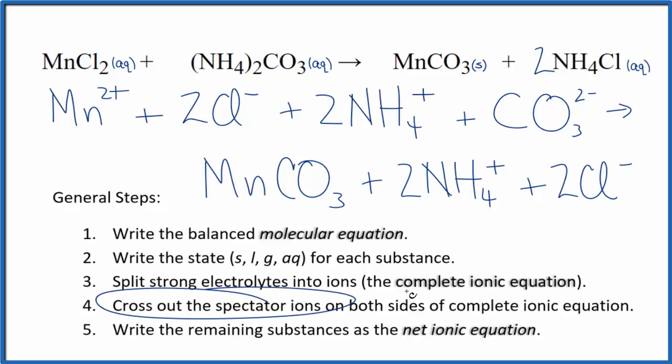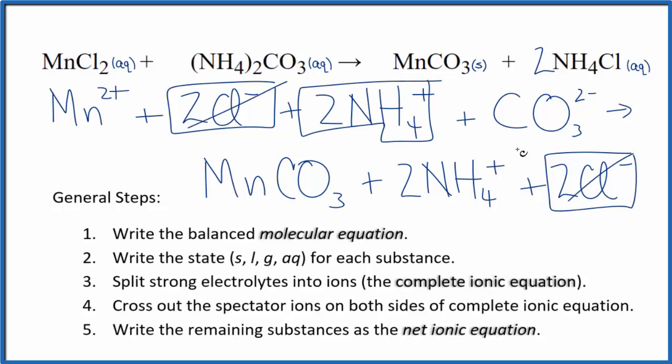Now we're going to cross out spectator ions. They're on both sides. Top we have reactants, the bottom product. You can see in the reactants, two chloride ions here and two here. Those are spectator ions. And the two ammonium ions, we have that again here, these are spectator ions. Let's cross those out.